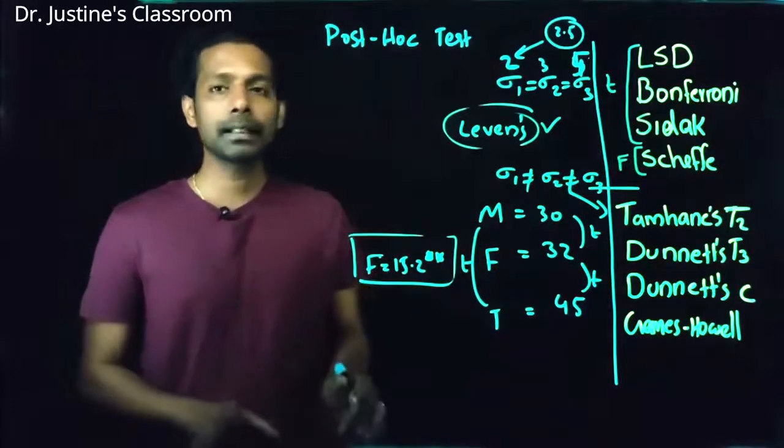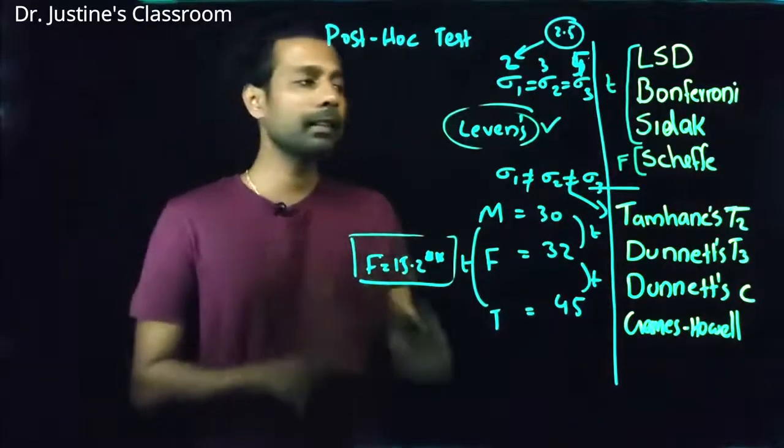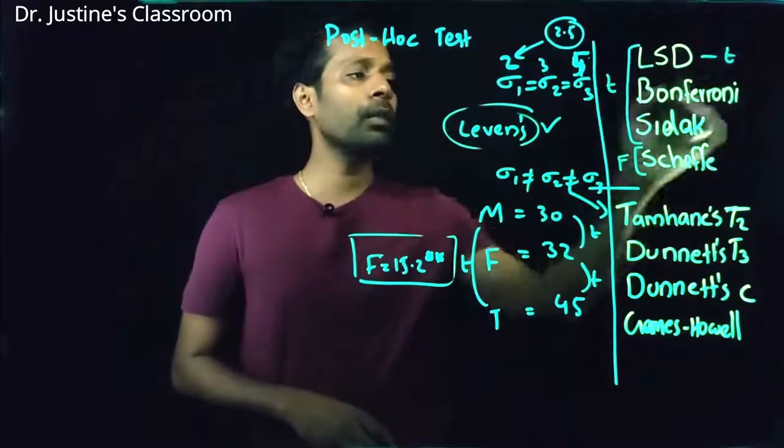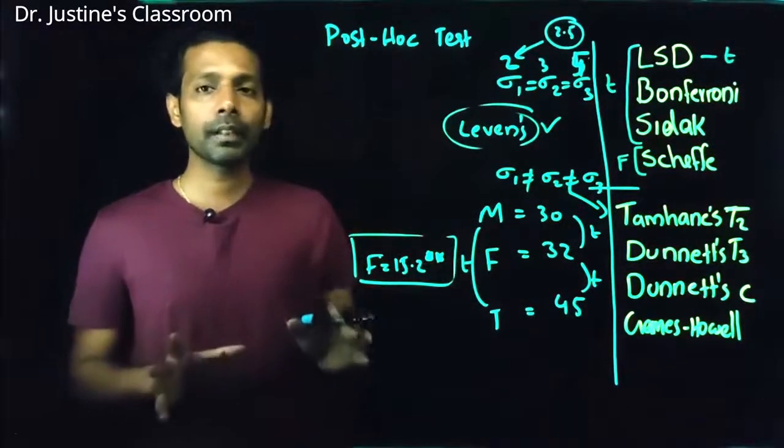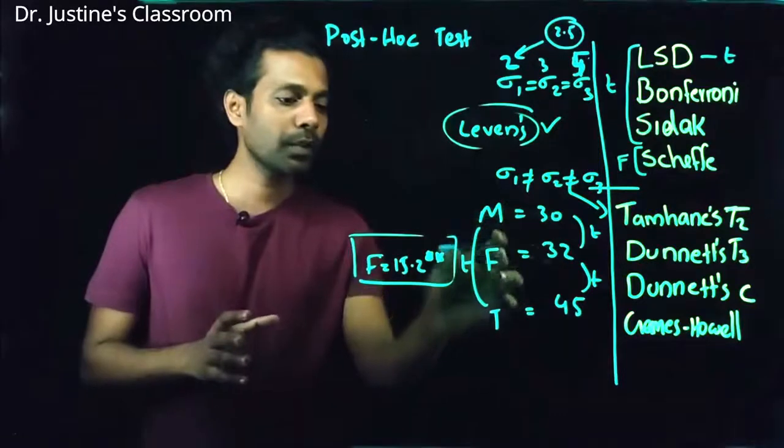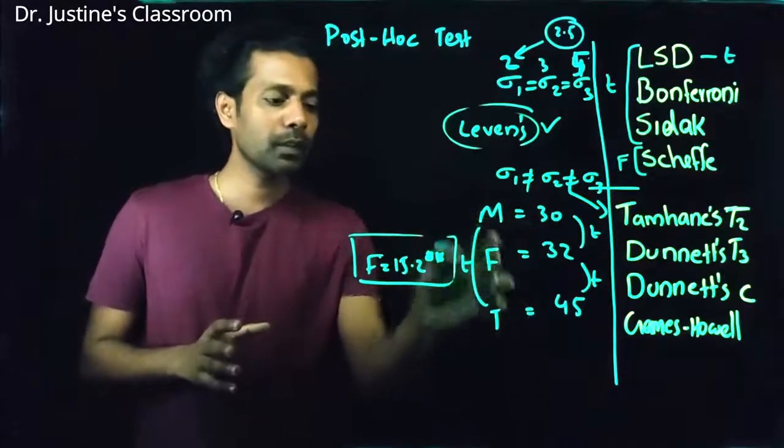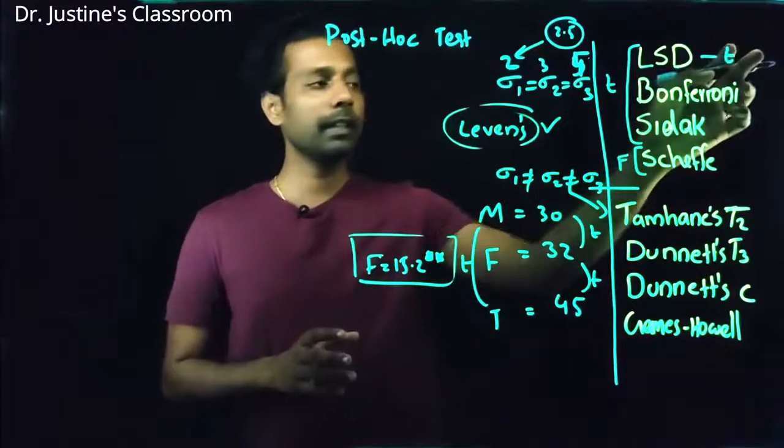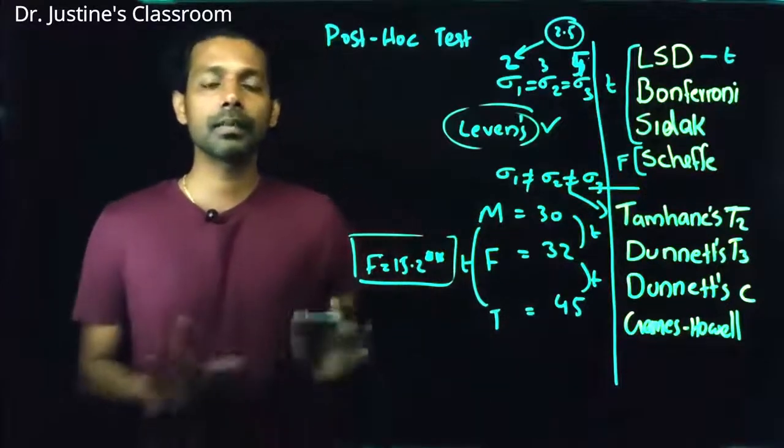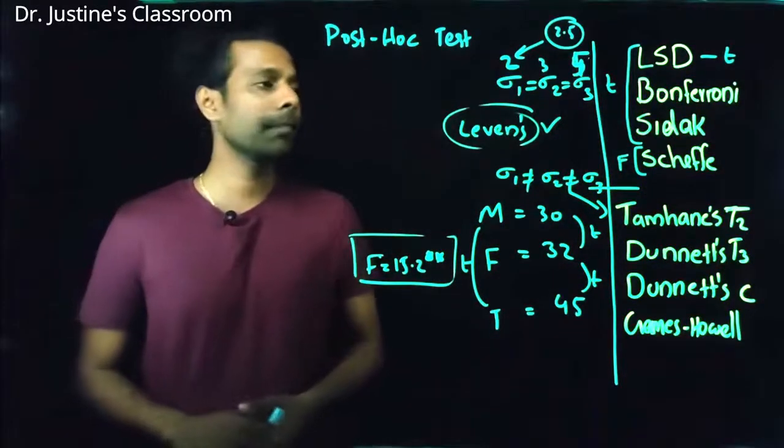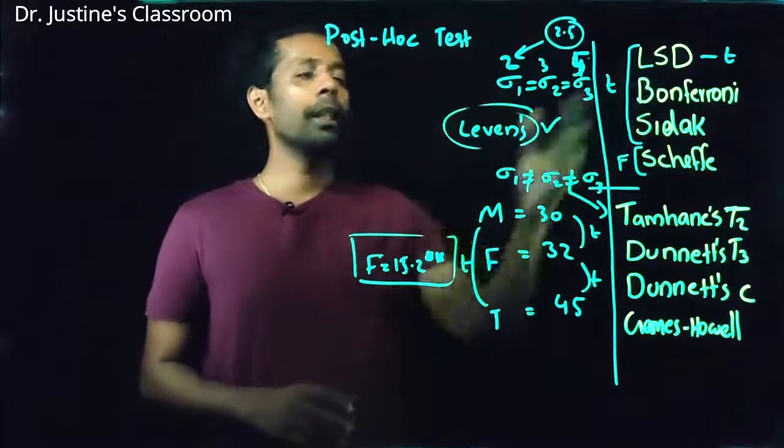So what is LSD? LSD does a basic simple kind of T. That means no correction, no changes. If you do T, you test between first group and second group, second group and third group, and first group and third group, you will get T. This LSD values. No correction is done. It's basically independent sample t-test.